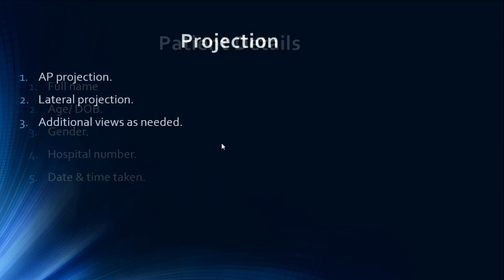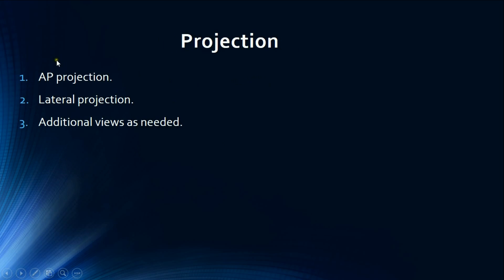Then we look at the projection. In general, we should always take at least two projections in orthopedic X-rays, and usually these are the AP projection and the lateral projection.